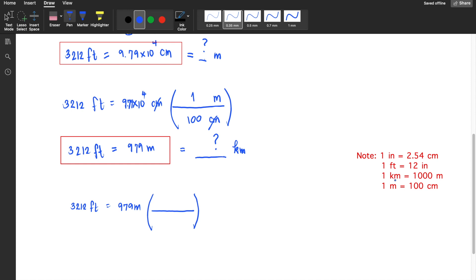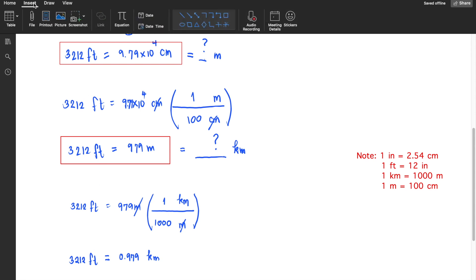To cancel out the meters, I'll write meters in the denominator and the desired unit, kilometers, in the numerator. In one kilometer, there's 1,000 meters, so I can cancel this out. 979 divided by 1,000 gives 0.979 kilometers. So 3,212 feet is also equivalent to 0.979 kilometers. Those are the answers.